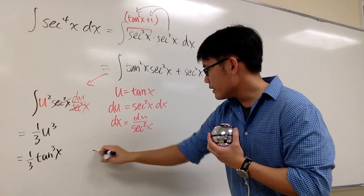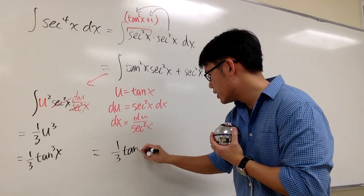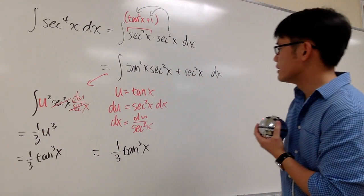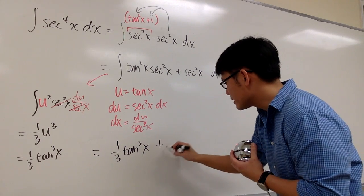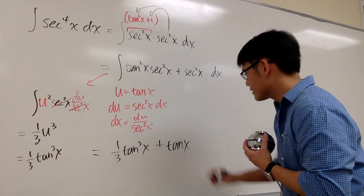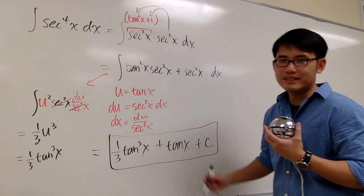So now, this right here, altogether is 1 third tangent to the third power x. And this is just tangent x, so plus tangent x. And we are done. So we put plus c, and then box the answer. That's it.